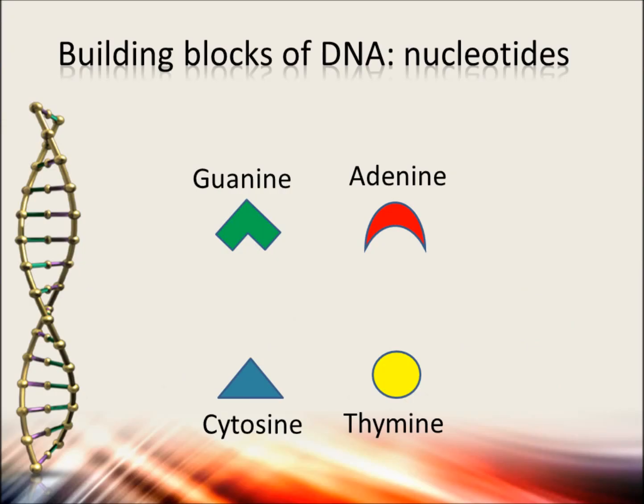First, let's explain some more about DNA. There are lots of things that can be explained about it, but let's focus on the part needed to understand this subject. The building blocks of DNA are called nucleotides, and there are four types of them: guanine, adenine, cytosine, and thymine.